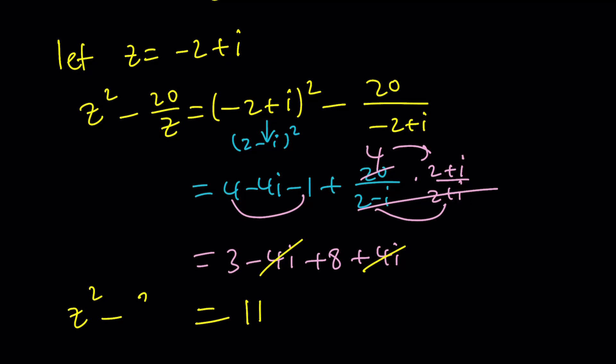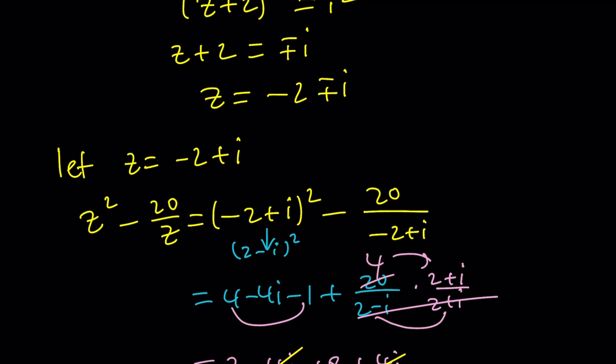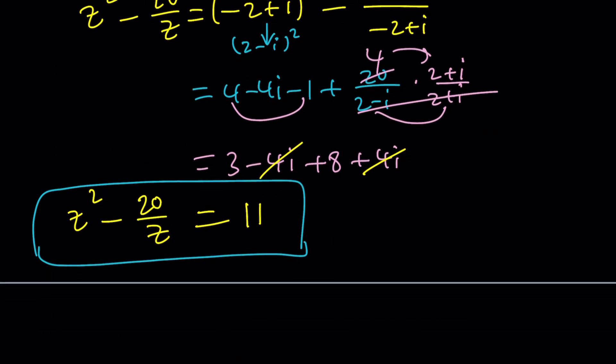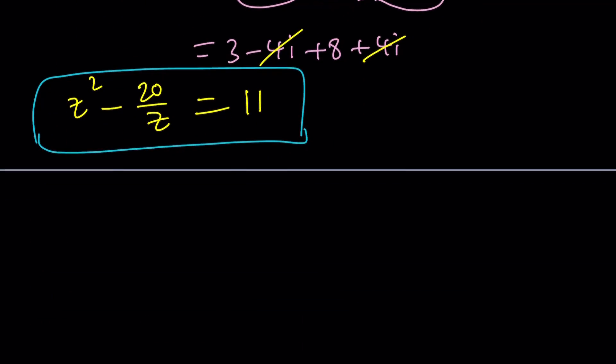And that will be the answer or the value of the algebraic expression, right? So based on the z values, we got this. What would happen if we used negative 2 minus i? You can definitely check it out. Left as an exercise for you guys. So that is the first method.